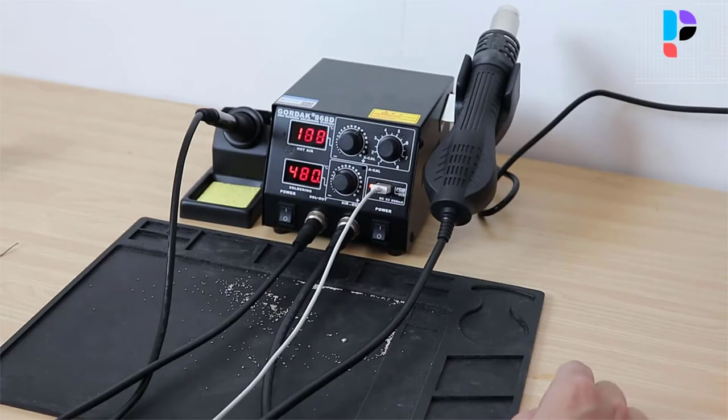Widely used in heating shrink, paint drying, adhesive removal, thawing, warming, plastic welding. Soldering iron and air gun work independently with their own digital display and independent temperature control knob.